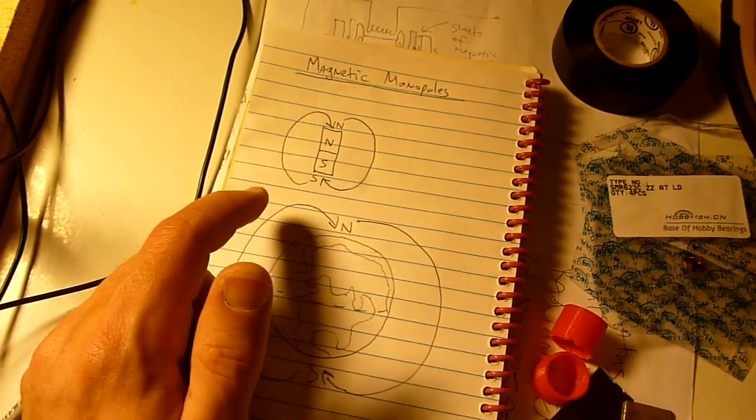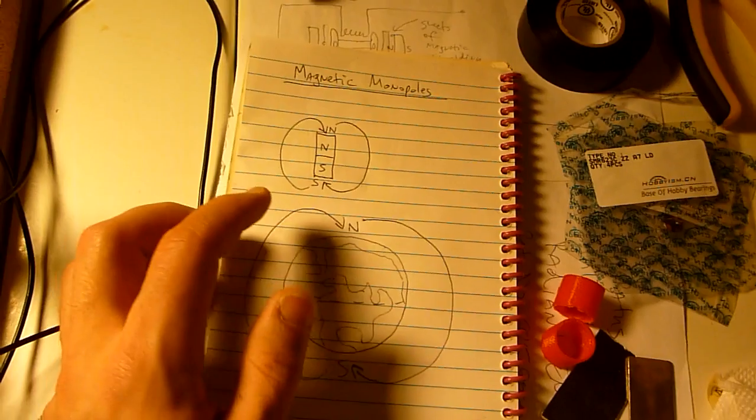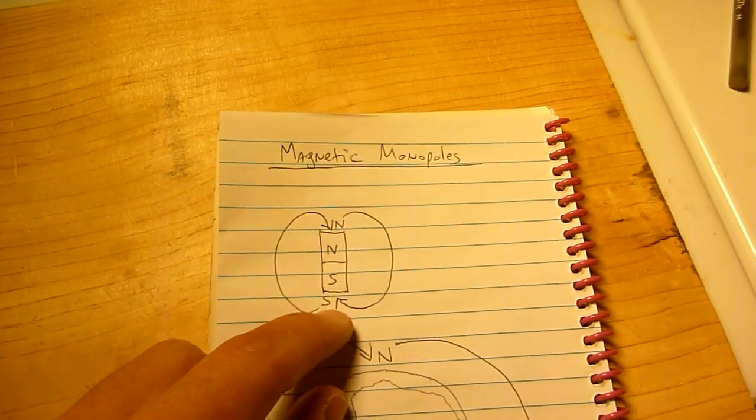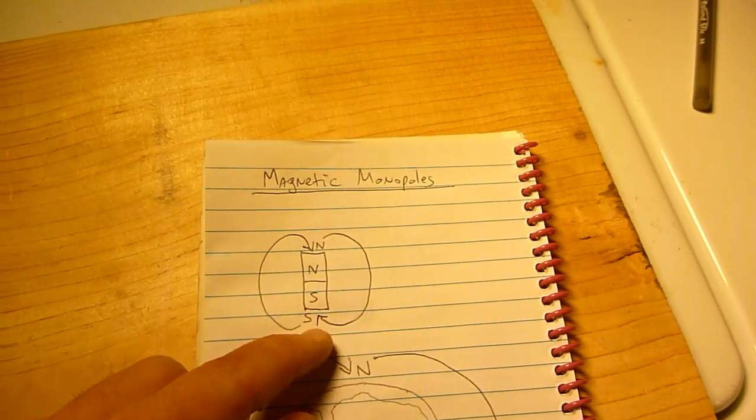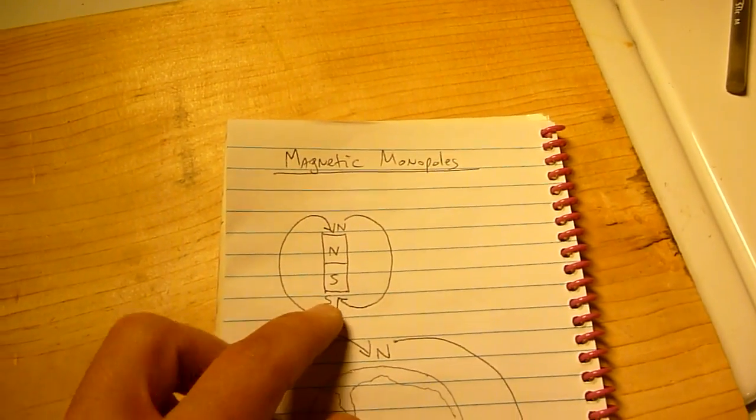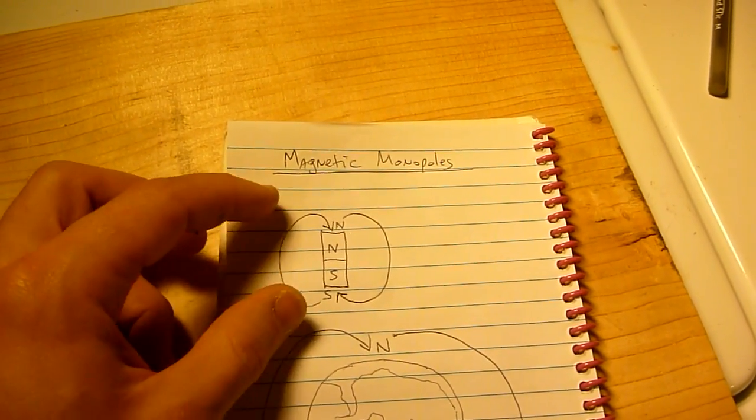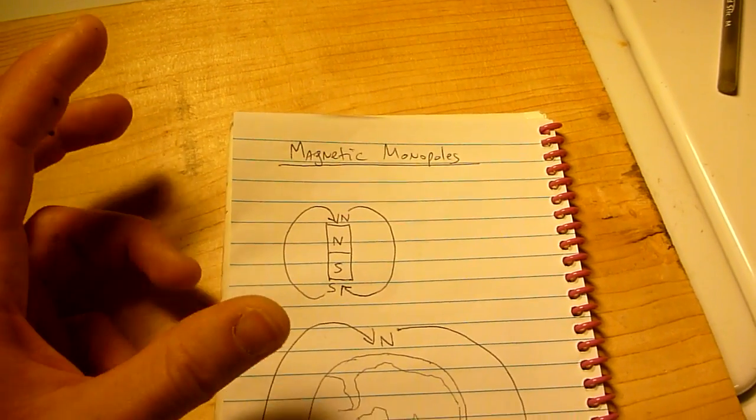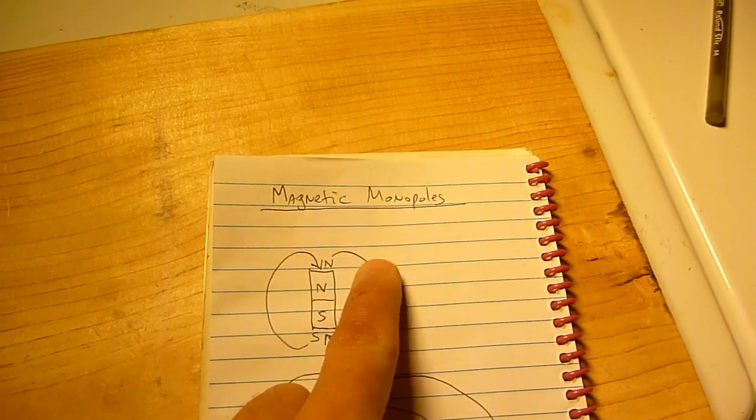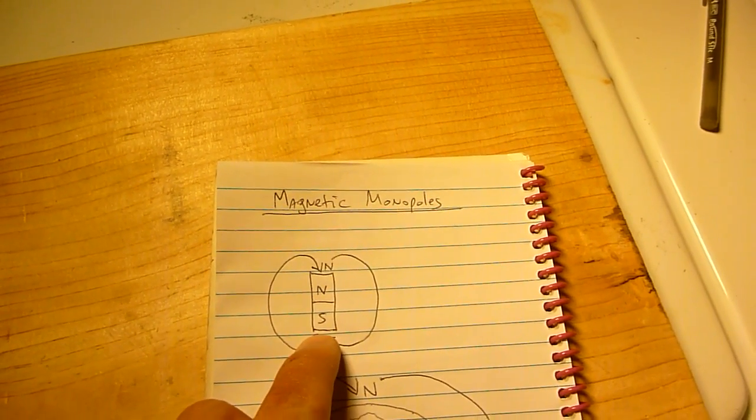He thought that magnetism and gravity were one and the same. So here's his theory of the monopoles, magnetic monopoles. Imagine you have your magnet and the magnet doesn't contain the monopoles, so it serves as a lens basically and these monopoles are present in the environment. From the north side of the magnet you have north monopoles and they go to the south side of the magnet.